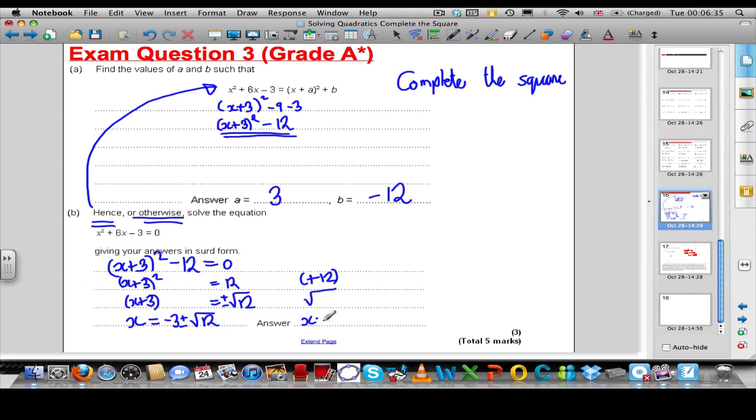Your first x, therefore, is -3 plus the square root of 12. Your second x is -3 subtract the square root of 12. There is the answer to this grade A* exam question. Thank you for watching my video.